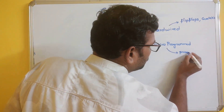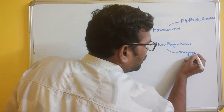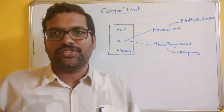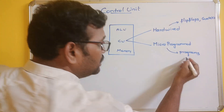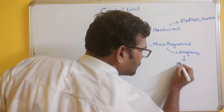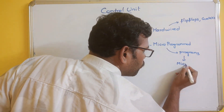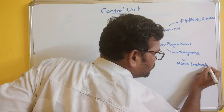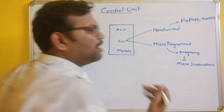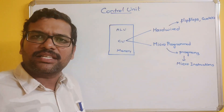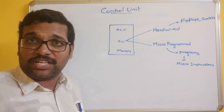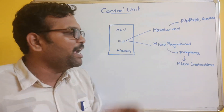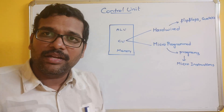A program is a set of instructions. These programs will also be called as micro-instructions. For every program there will be a number of different kinds of instructions, and those instructions we can also call as micro-instructions.